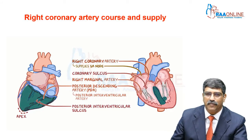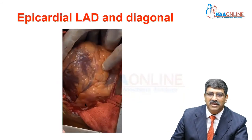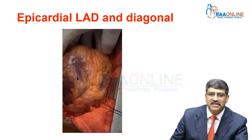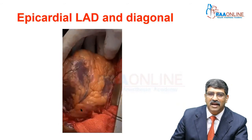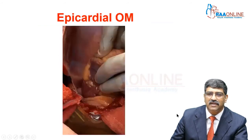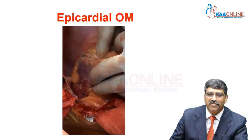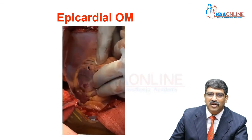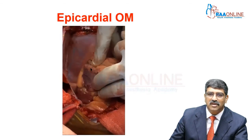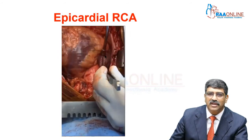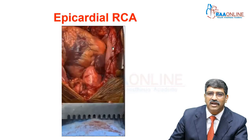From the surgical point of view, here you can see the LAD and the diagonal branch, the left atrium, the circumflex continuing as the obtuse marginal, and the right coronary artery running between the right atrium and right ventricle.